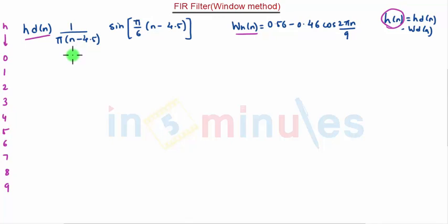For the first value, that is n is equal to 0, HD of n is equal to 0.05 and W of n is equal to 0.08. When both are multiplied, we get 4 into 10 raised to minus 3. Again, for n is equal to 1, 0.0878 and here 0.1876, and when both are multiplied, we again get 0.0164.